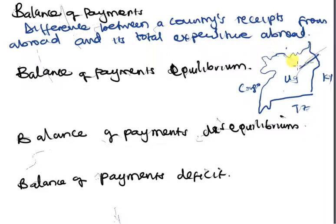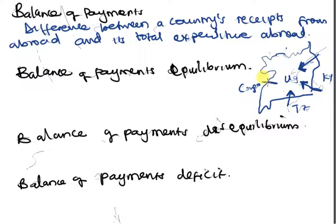After selling goods outside, for example farmers in Uganda selling coffee abroad, they bring back the money — that is a receipt. If Kenya offers us a loan to help construct our infrastructure, that money coming into Uganda is also a receipt. Similarly, if Tanzania, Congo, or Sudan send money into Uganda, those are all receipts.